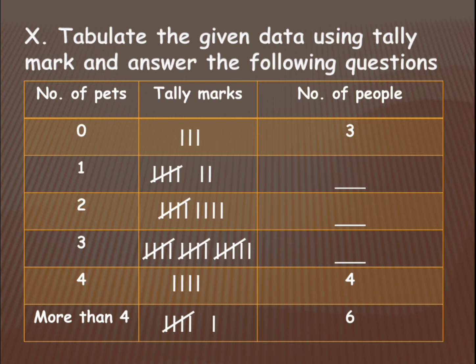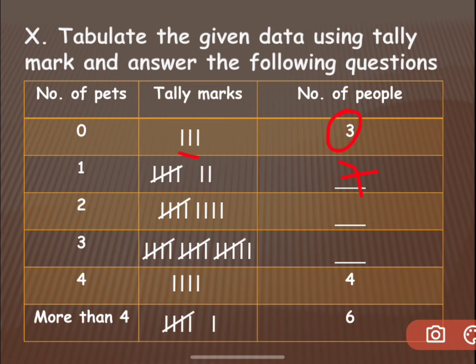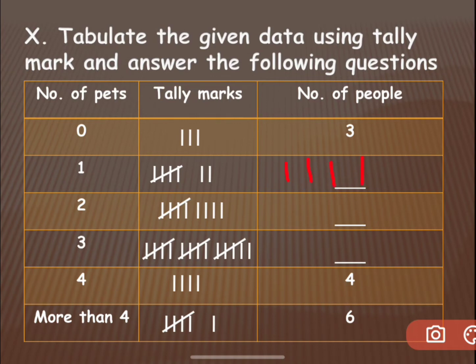So how to write the tally marks: if the total number of people are three, then you draw three lines for the tally marks. If they are seven, you draw the first line, second line, third line, fourth line, and the fifth line should cross over the fourth line — which means it is a bundle of five. Then six, seven. In that way you draw your tally marks.